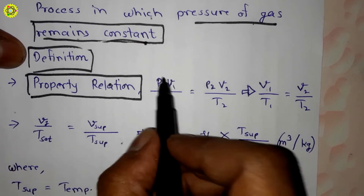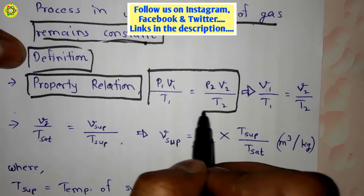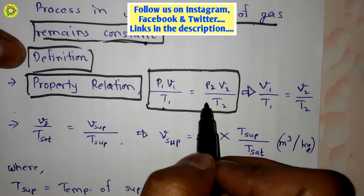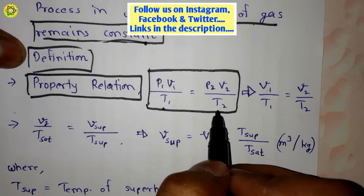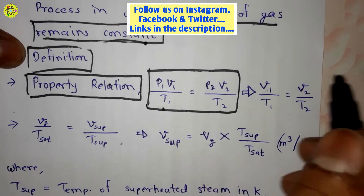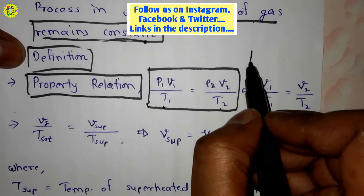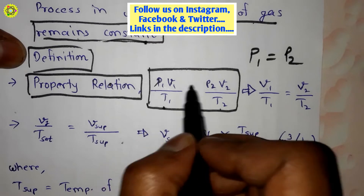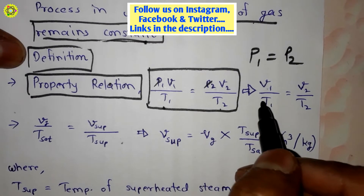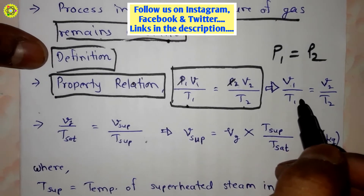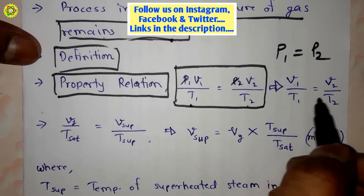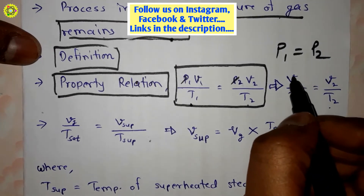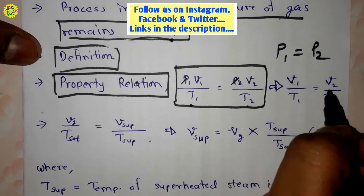The constant pressure process has a general property relation: p1·v1/T1 = p2·v2/T2. Since this is a constant pressure process, p1 equals p2, so they cancel out, and we are left with v1/T1 = v2/T2, where v denotes specific volume.